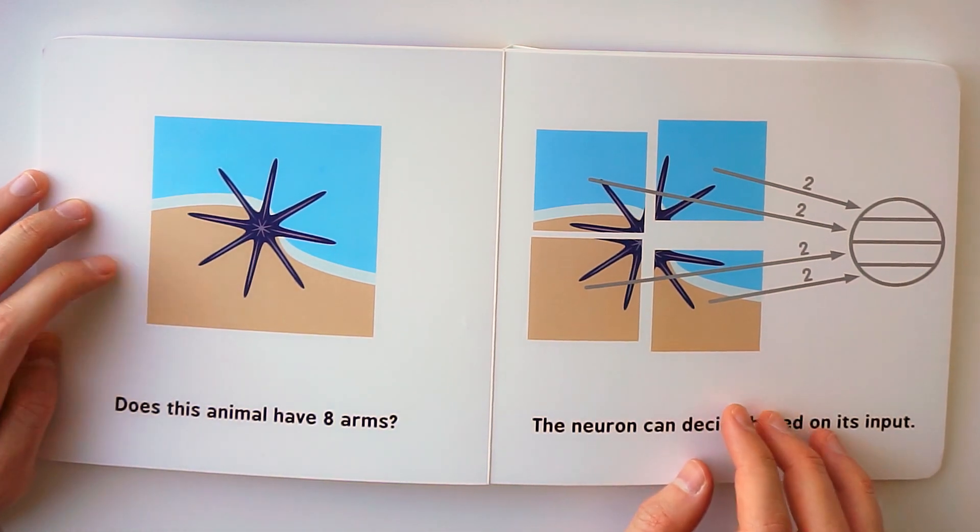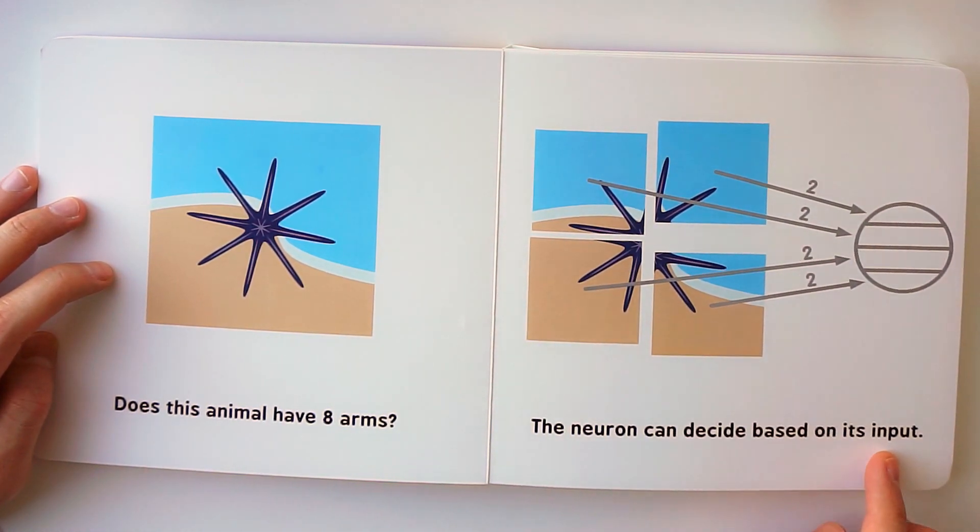Does this animal have eight arms? The neuron can decide based on its input.